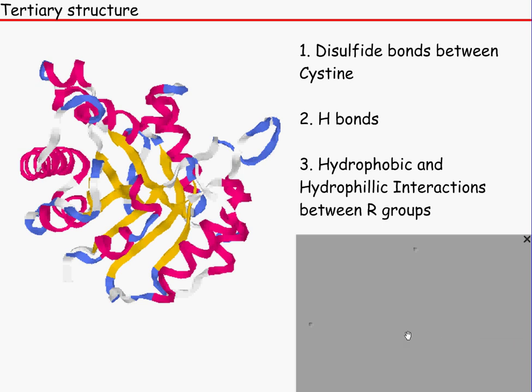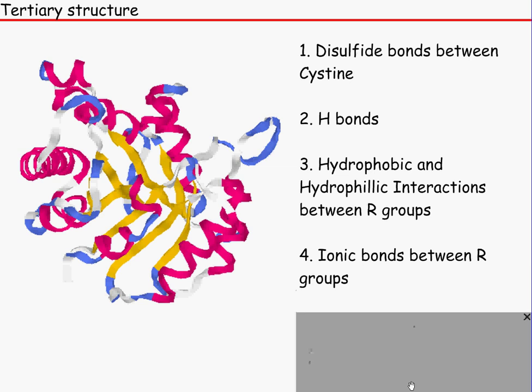And the last one is ionic bonds. Basically, ionic bonds might just happen between the side groups. The side groups might have sodium at the end of it and the other side group might have chlorine on it. So therefore, ionic bonds would happen between them and Bob's your uncle.